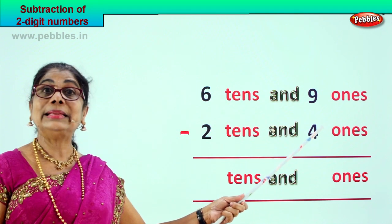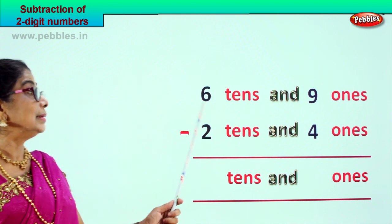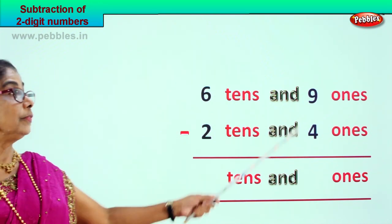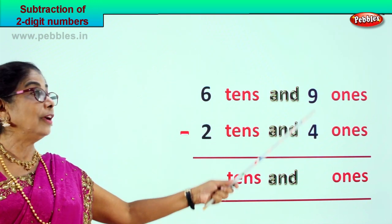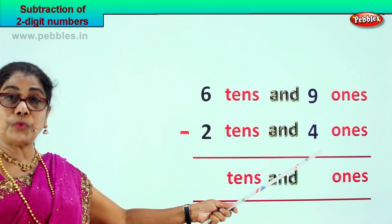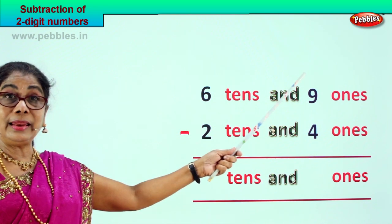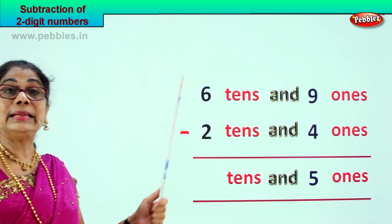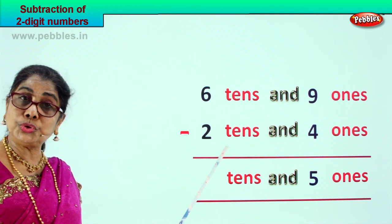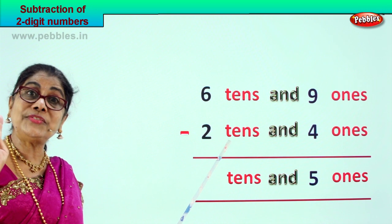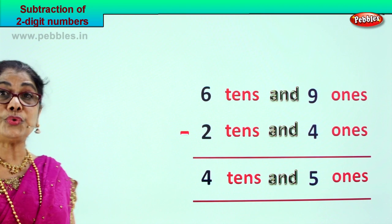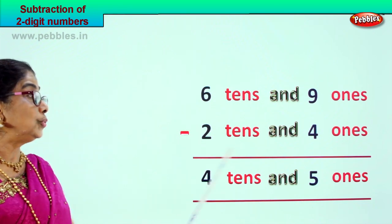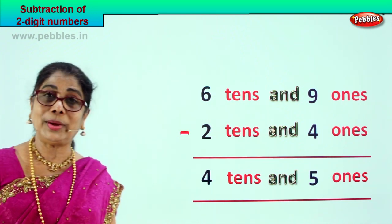6 tens and 9 ones take away 2 tens and 4 ones. 69 minus 24. Look at the ones place first — 9 take away 4: 5, 6, 7, 8, 9 — 9 minus 4 is 5 ones. 6 minus 2: 3, 4, 5, 6 — 6 minus 2 is 4. 6 tens minus 2 tens gives you 4 tens. Your answer is 4 tens and 5 ones. 6 tens and 9 ones minus 2 tens and 4 ones — your answer is 4 tens and 5 ones.